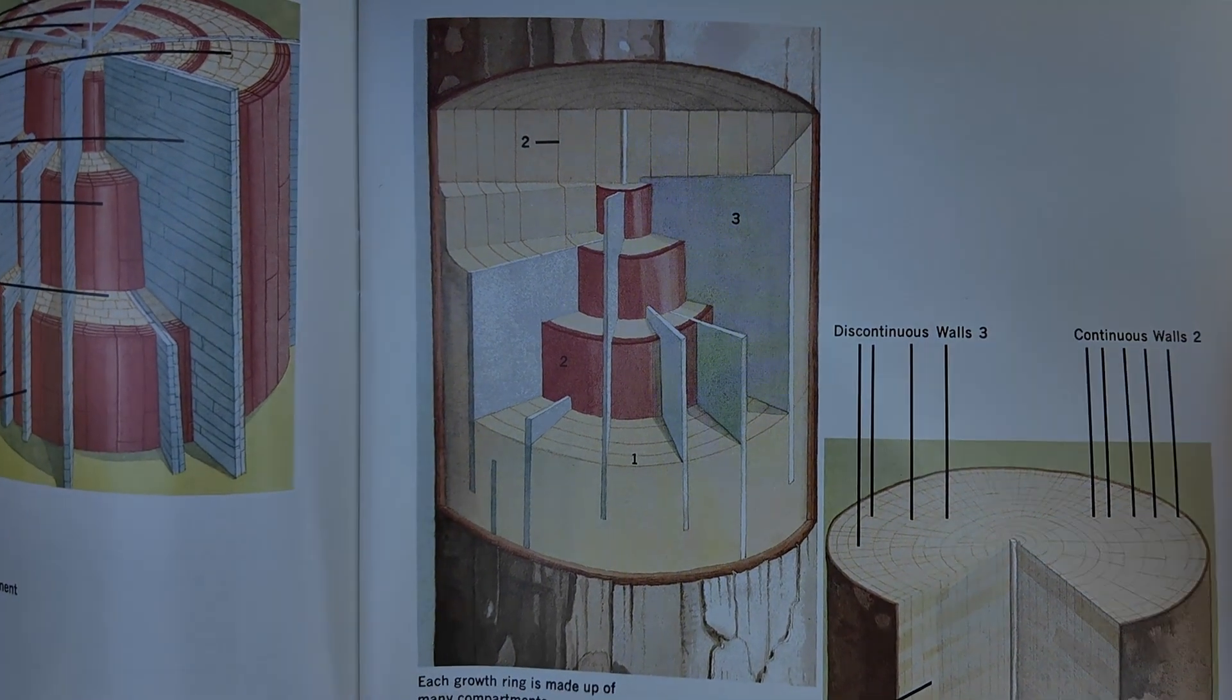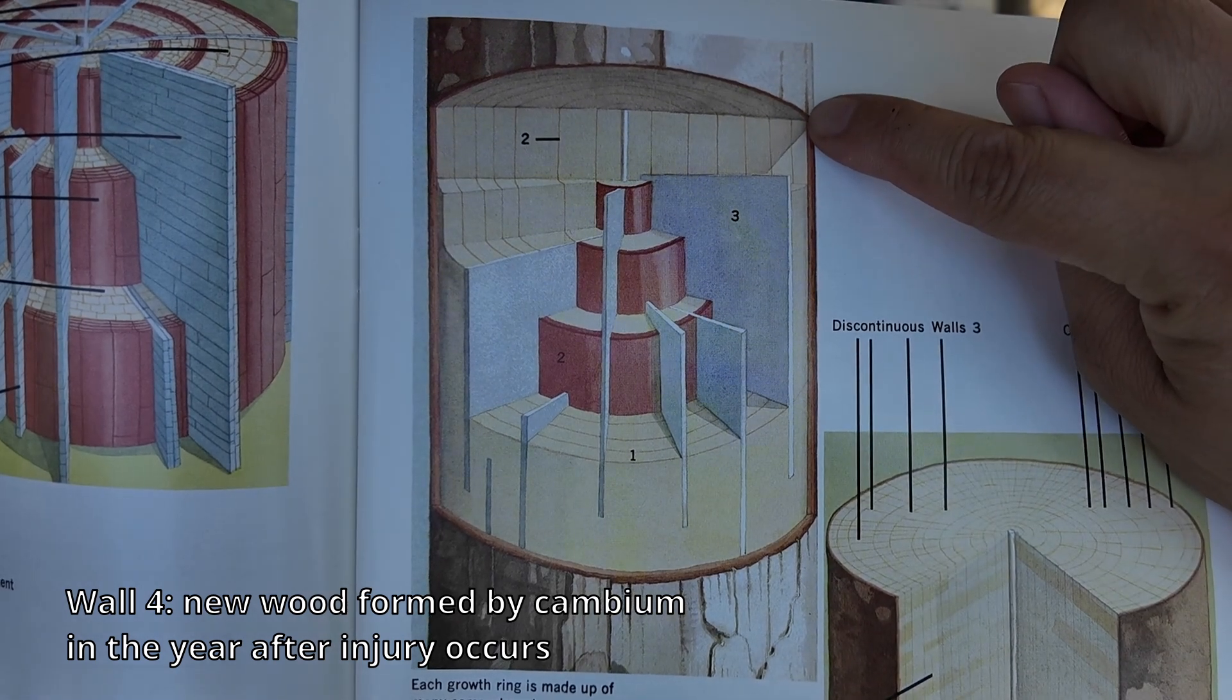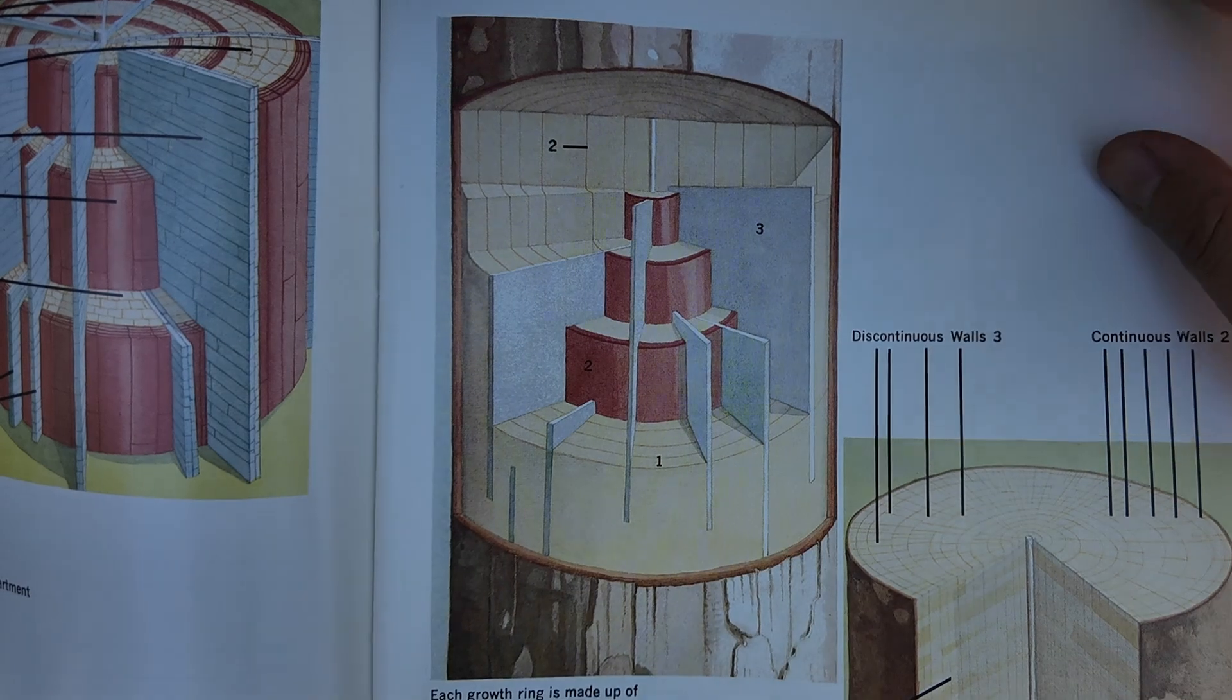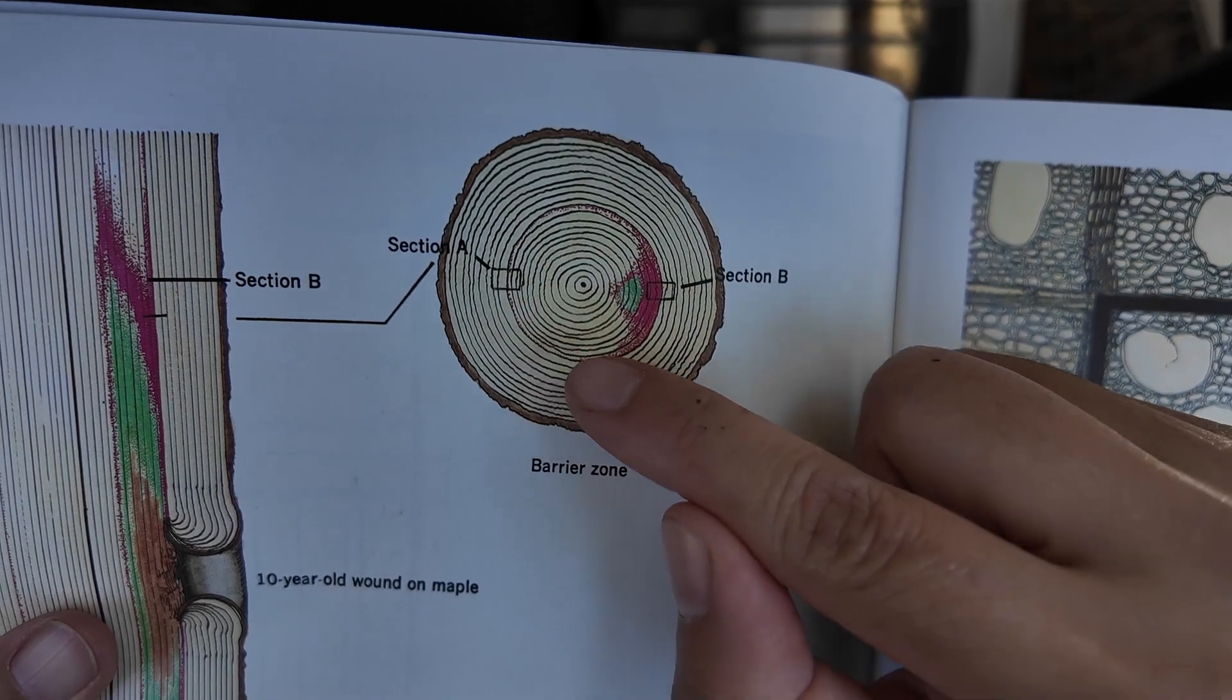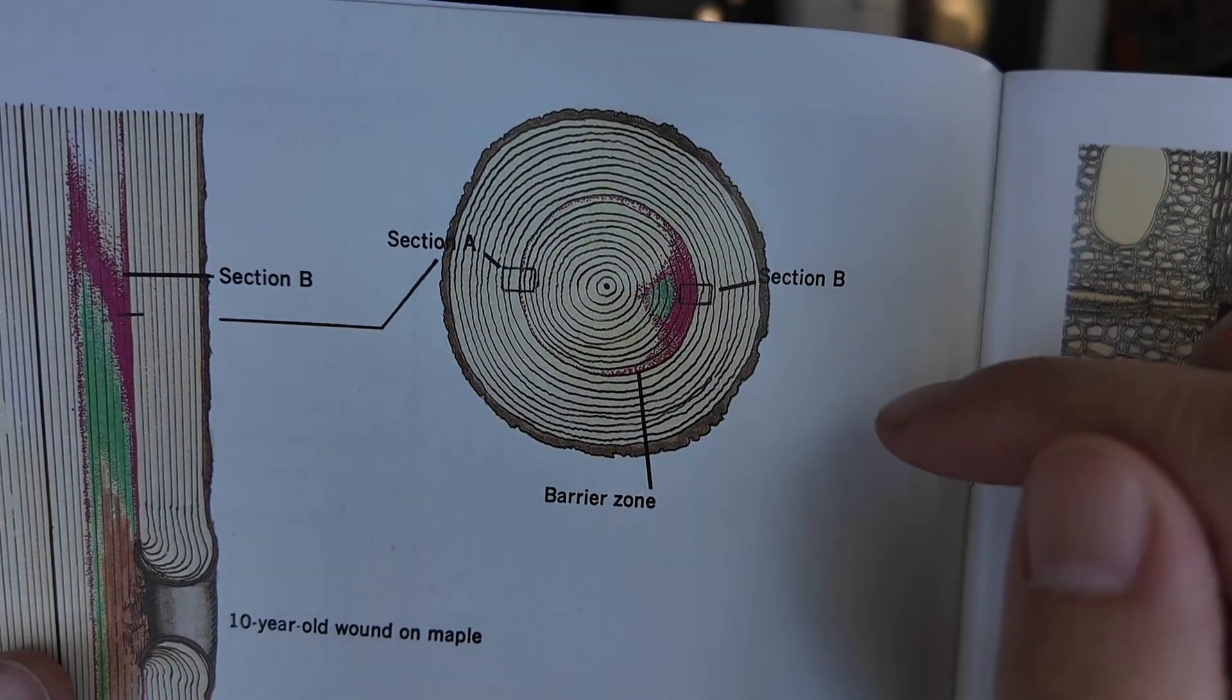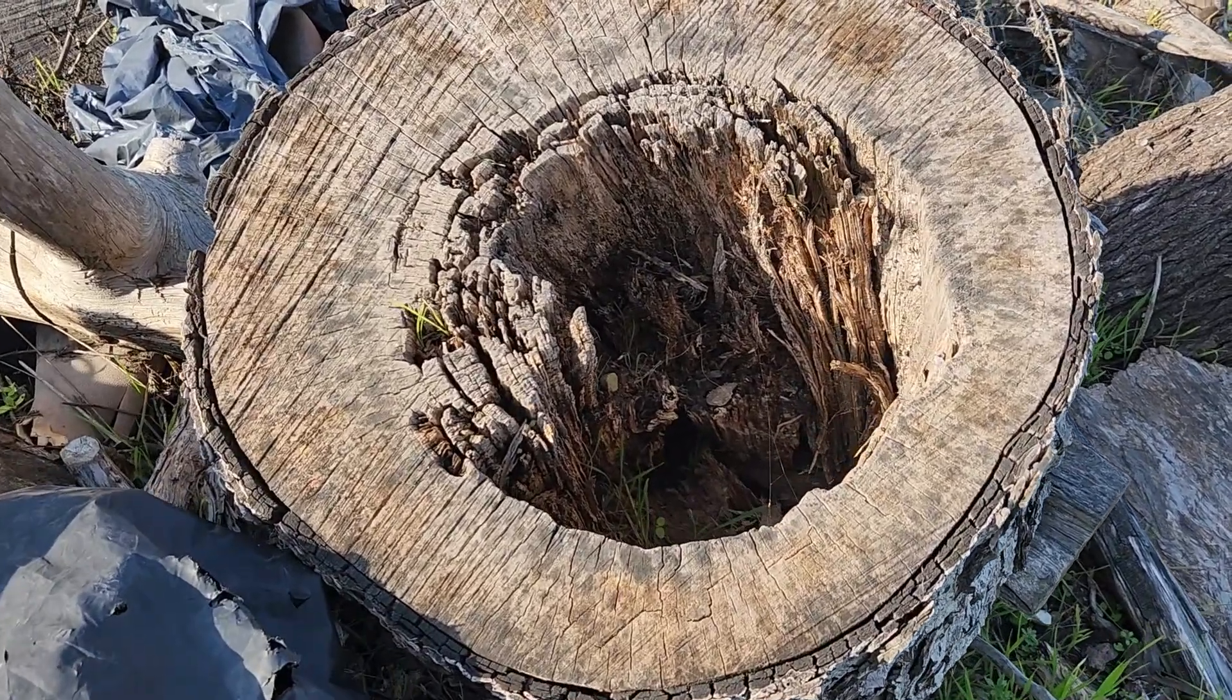Now we're on to wall four. Wall four is the strongest of the walls and it's the only one that isn't already in existence at the time of the injury. Wall four is next year's wood, and the wood is going to be chemically and anatomically different. It's intended to prevent whatever pathogen got into the tree from infecting next year's growth. In this diagram, wall four is indicated by the pink ring here. It's preventing whatever's inside the tree from getting into the new tissue. Wall four is also called the barrier zone. Any of the walls can fail and they do, but in the event that every wall but wall four failed, you'll have a hollow in the center, but wall four will successfully have prevented the new wood from getting damaged.